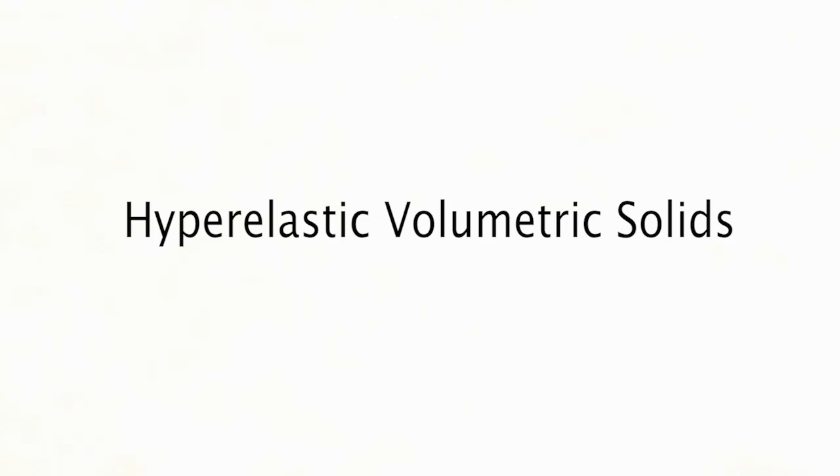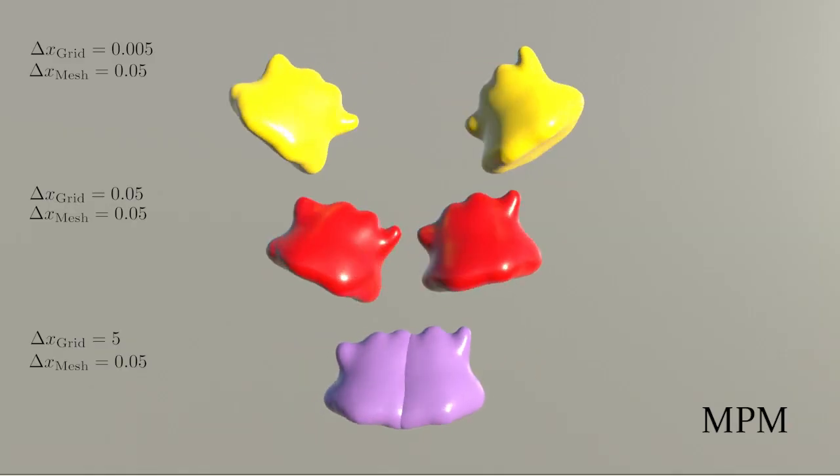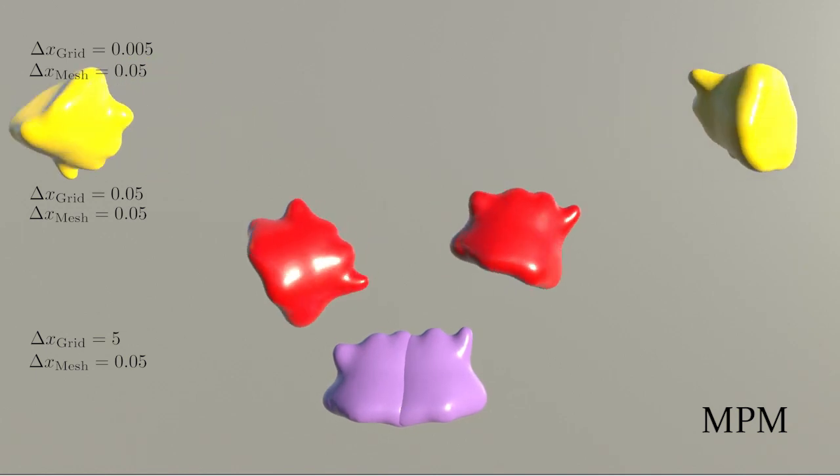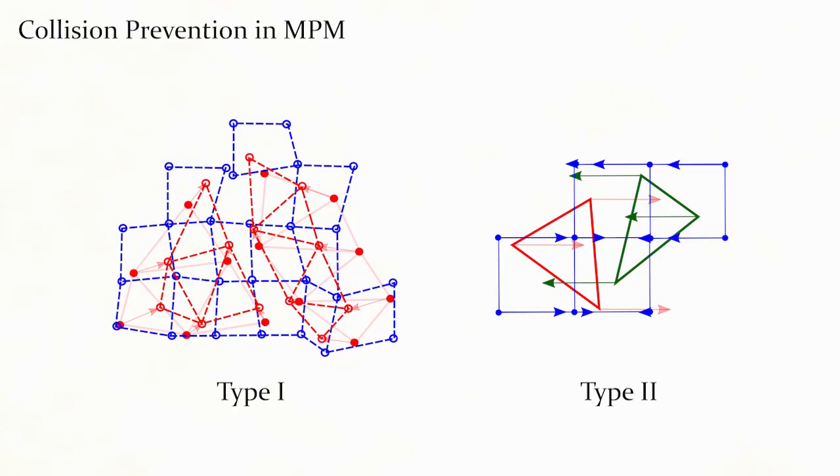Our novel method allows for the resolution of frictional contact with volumetric solids, which is tricky for the traditional updated Lagrangian MPM simulation. Here we discuss the two mechanisms of collision resolution in traditional MPM to help illustrate our new algorithm.